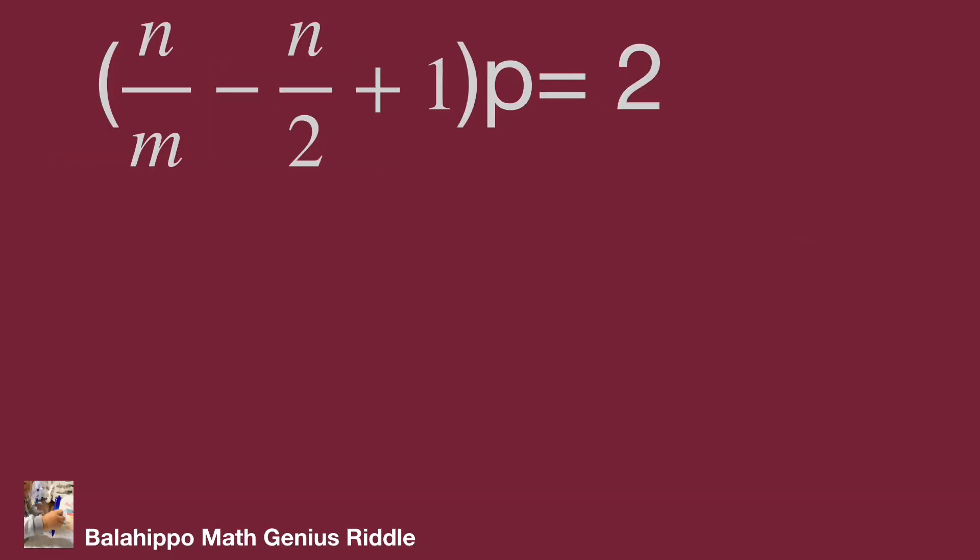The given information: bracket n over m minus n over 2 plus 1 bracket times p equal to 2. We have m, n, p, three unknown numbers. I'm going to make boundary to find the value. So m, n, p is positive integers. Let us focus on n over m minus n over 2 plus 1. The value for this quantity is positive.